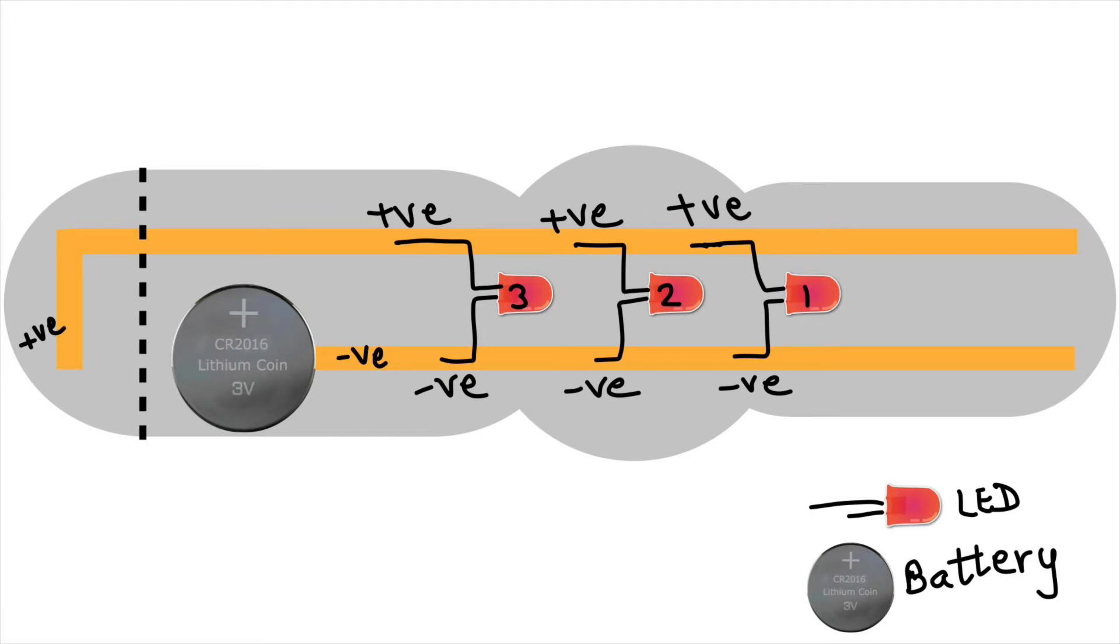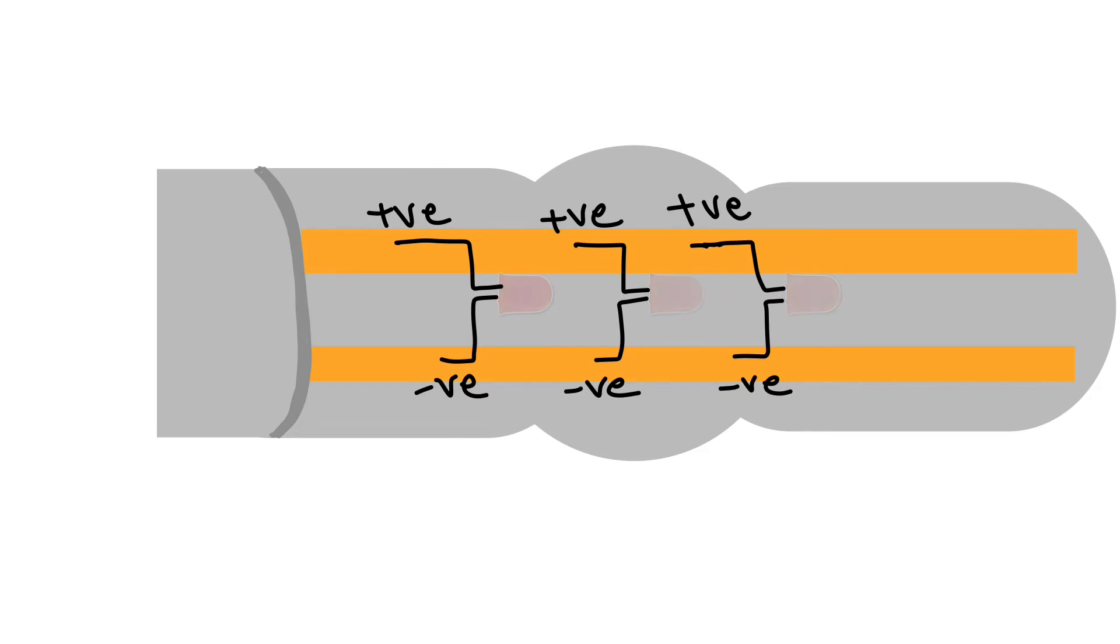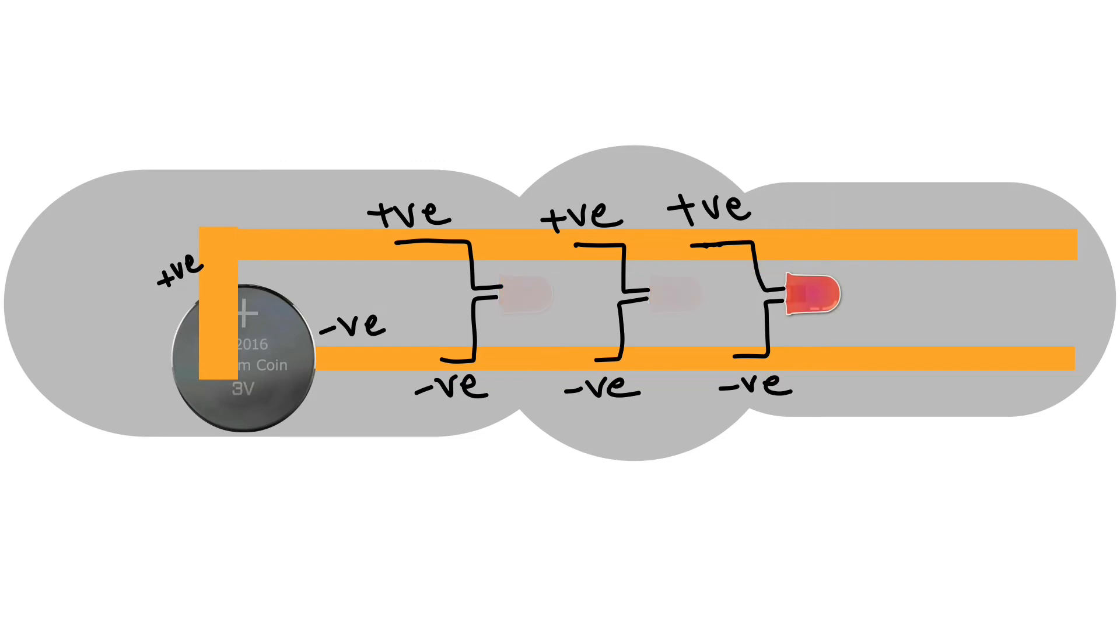And our LEDs will glow. This is how the bracelet will look when we are going to fold at the dotted line. So all the LEDs will glow because the circuit is completed. This is the circuit underneath the folded part of the bracelet.